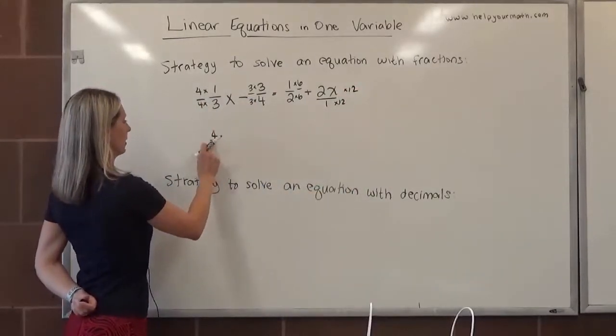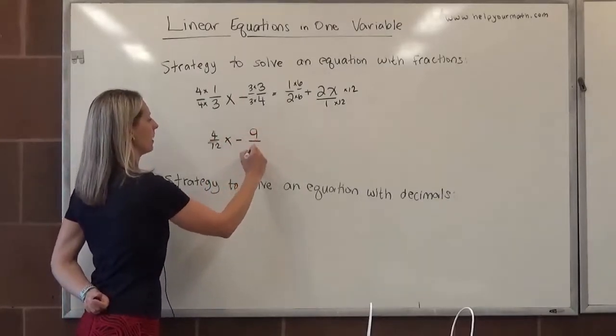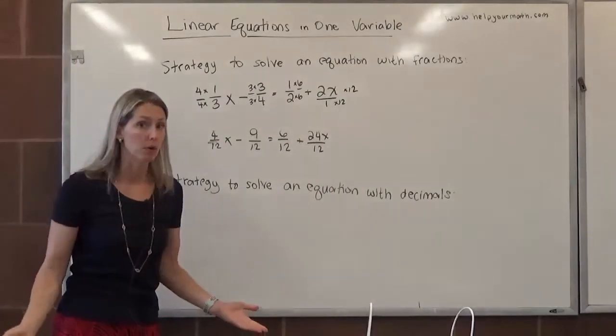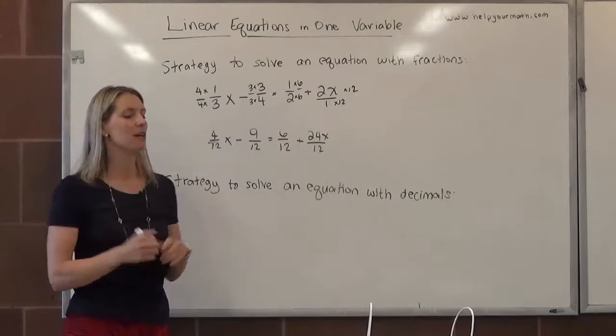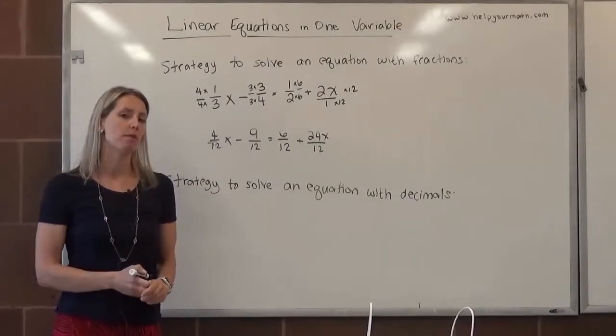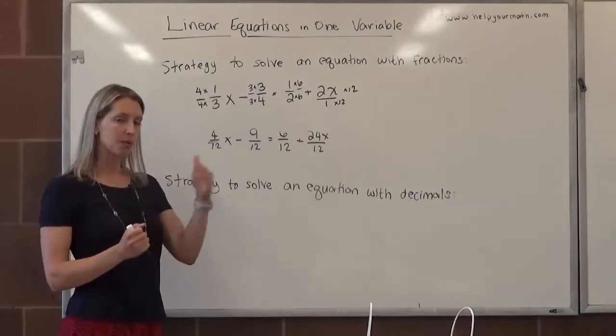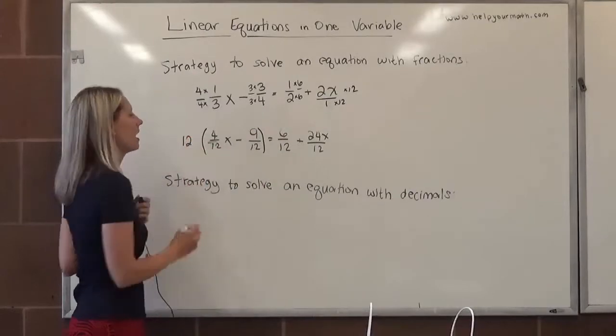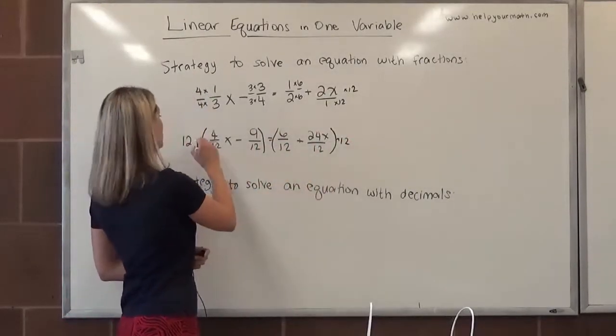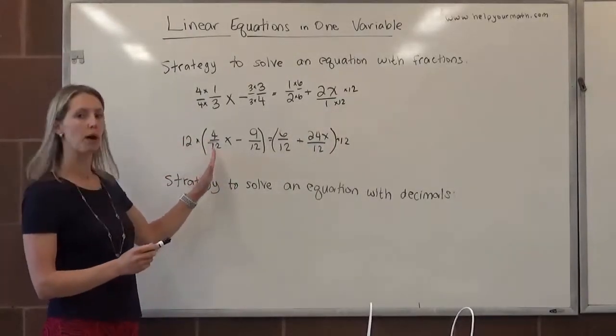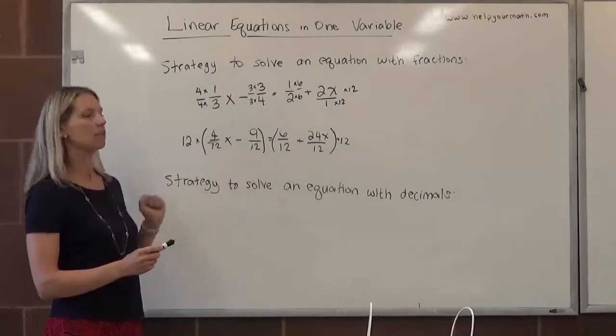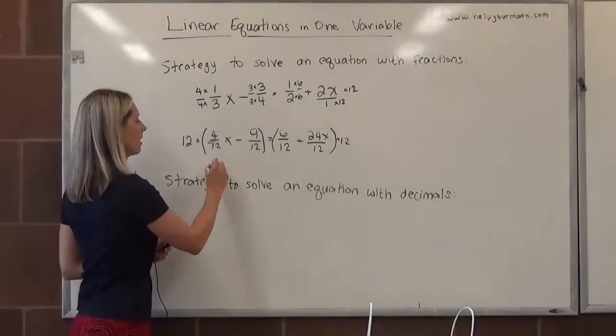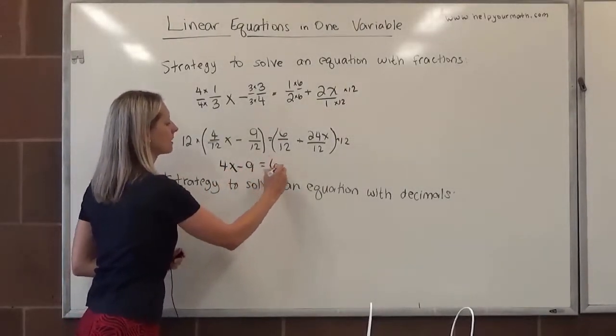Now what do we have? We have 4/12 x minus 9/12 equals 6/12 plus 24x/12. But what we can do now is use the multiplication property of equality to cancel out each of the 12s. If I multiply both sides of an equation by the same amount, that will not change the equality. I'm going to multiply the left-hand side by 12 and the right-hand side by 12. That's going to cancel out with each of the denominators. So what we're left with are the numerators: 4x minus 9 equals 6 plus 24x.